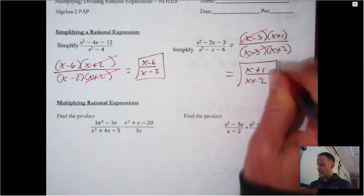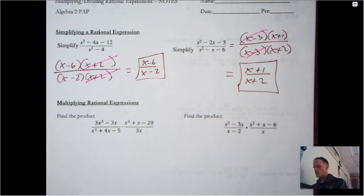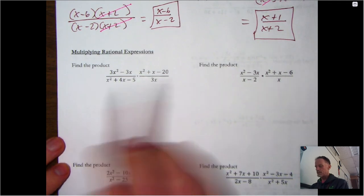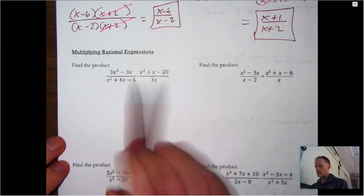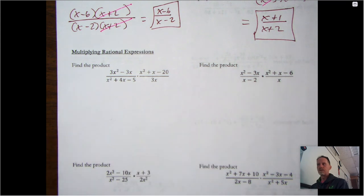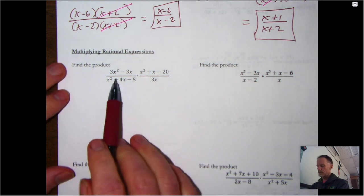Now, these first two examples were just simplifying. But when you're multiplying expressions, nothing changes — we just have two sets of fractions. We're still going to factor and cancel things out from either of the terms.